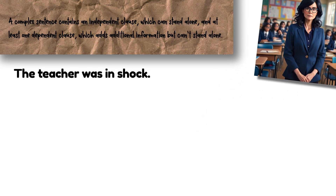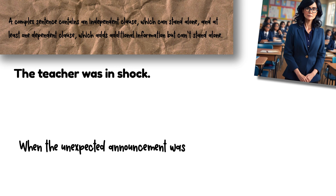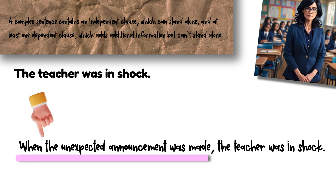One: 'When the unexpected announcement was made, the teacher was in shock.' Here we've created a complex sentence by adding a dependent clause that specifies the timing — when the unexpected announcement was made. This clause sets the stage for why the teacher felt shocked, providing context and depth to the initial idea.